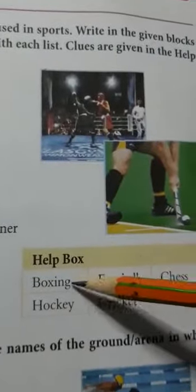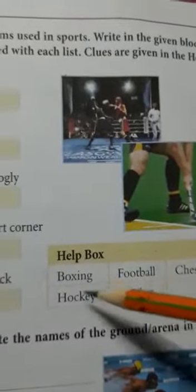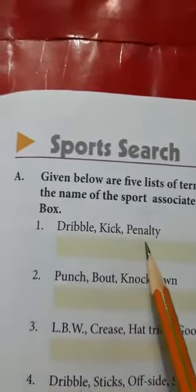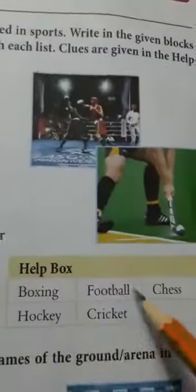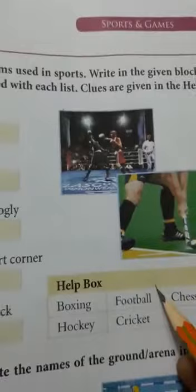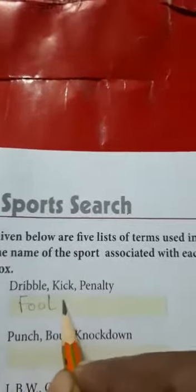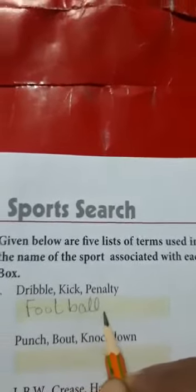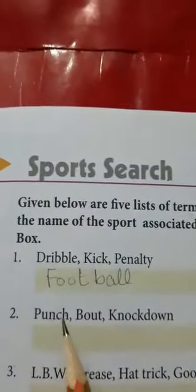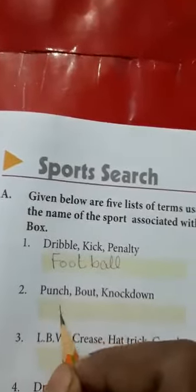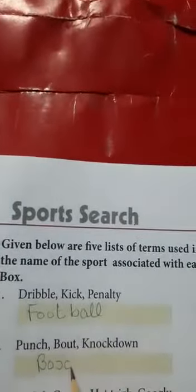We have a help box and we have to select the name from here. At number one, we are having dribble, kick, and penalty. From this help box we choose the game - that is football. We write here football. Next is punch, bout, and knockout - none other than boxing. The sport is boxing, you will write the name boxing here.